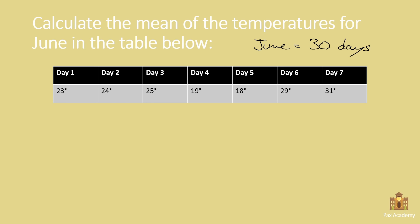However, in the table, they only give us 7 days. Therefore, we know that this is a sample from June. In that case, we know we have to use the sample mean formula, which is x bar is equal to the sum of x sub i over the sample size. And we know that the sample size is 7.